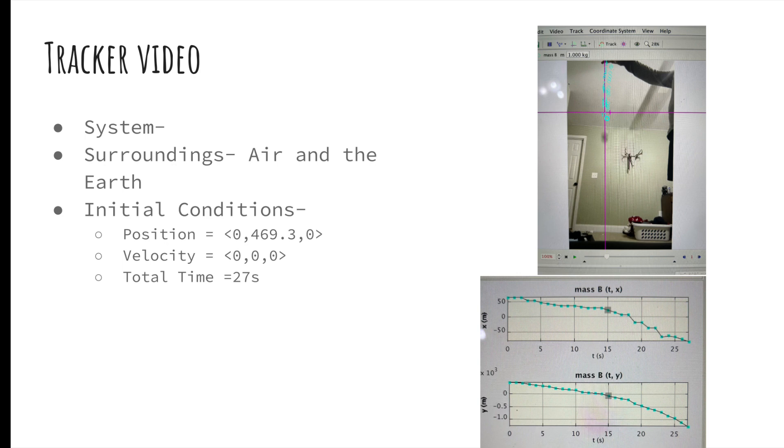For my video, my object is a golf ball and the surroundings are the Earth and its air. I position my coordinate plane with the positive y-axis going up and the positive x-axis going right, so my object moved along the negative y-axis. I use my ruler as the scale calibration. My initial conditions are shown here.